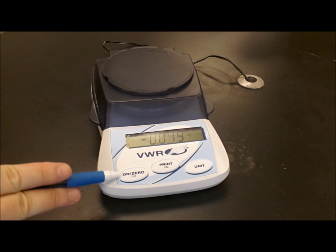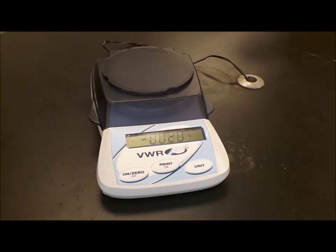The only button that concerns you is this button right here, the zero button. You can see that right now this balance reads a mass of negative .02 grams. There's nothing on it, so it shouldn't read that mass. So what we want to do is we want to hit the zero button to zero the balance. Now the balance reads zero. That's what the zero button is for, to put it back to zero.